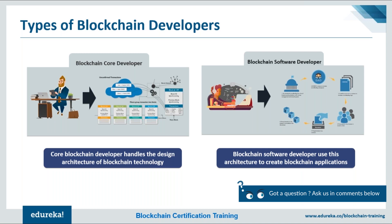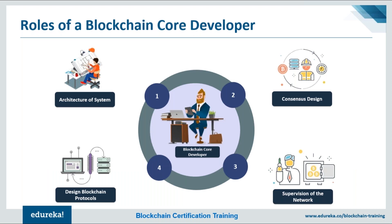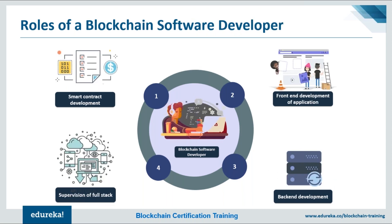Let's discuss the different roles of each type. Core blockchain developers create the blueprint of the entire network — they create the block schema, which defines what information goes into every block. They also create the protocols that run the entire network, and act as supervisors of the whole network development. Blockchain software developers are involved in making applications using blockchain technology. Their roles include developing smart contracts, creating interactive front-end designs, developing the backend, and supervising the entire stack of frameworks and technologies.